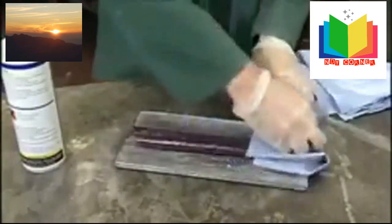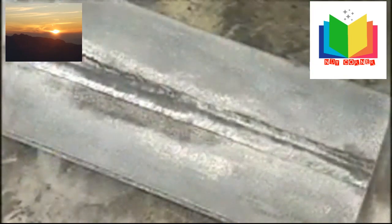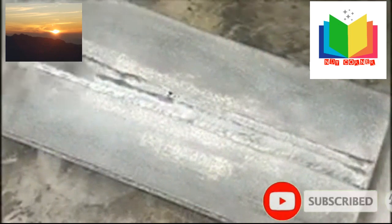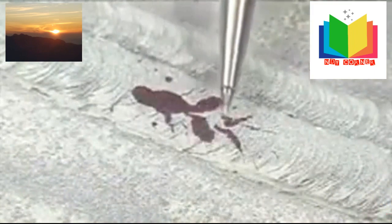After a specified period, the excess penetrant is wiped off and a powder developer applied. It works rather like blotting paper, drawing the penetrant out of the flaws so that they stand out in sharp contrast to the surrounding material. After a specified bleed time, the defects are recorded.